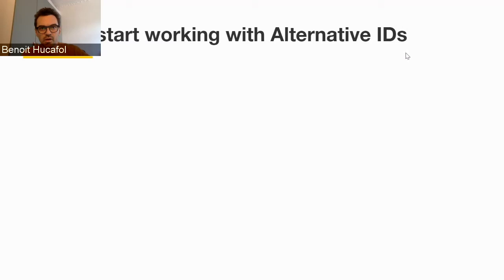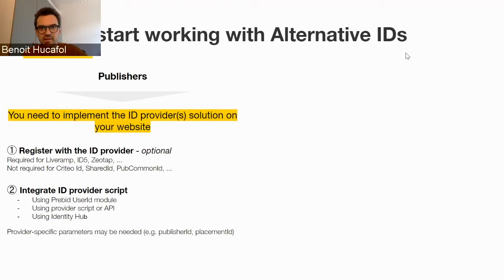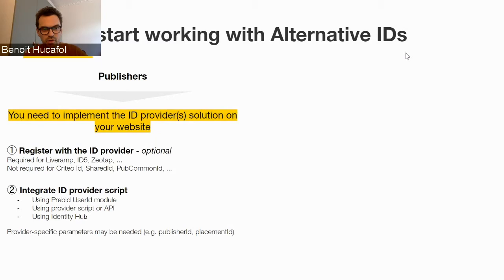More practically, if you want to start working with alternative IDs as a publisher, you need to implement one or several ID provider solutions on your website. This can be done in two steps. First, register with some ID providers — some require registration, like LiveRamp, ID5, or Zeotap, which can sometimes be done online. Others do not require sign-up, like Criteo or the Prebid Shared ID. Second, integrate the ID provider script into your website through your header bidding wrapper, or directly integrate the provider script, or use an identity hub like the one Smart provides.